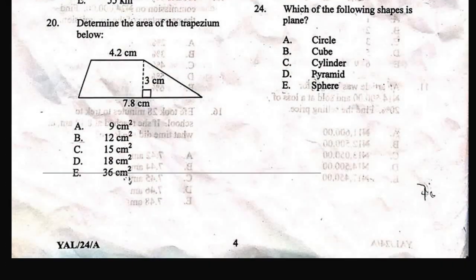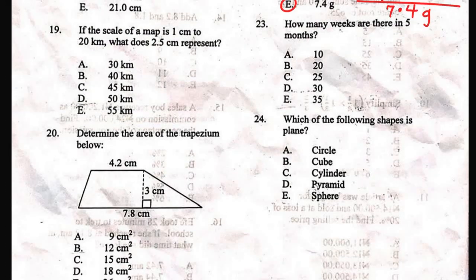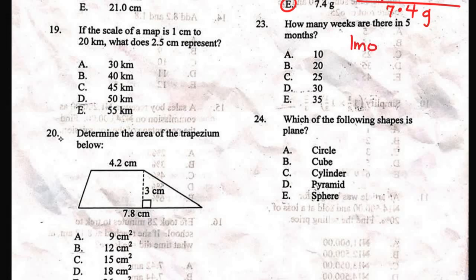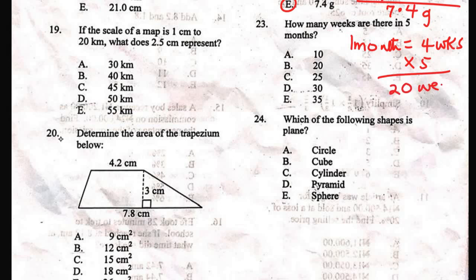Let's scroll down to question 23. This question says: how many weeks are there in 5 months? For 1 month we have 4 weeks — 4 weeks make 1 month. So for 5 months, you just multiply by 5. It will give us 20 weeks. So the correct option for this is B.